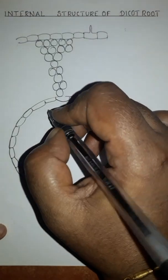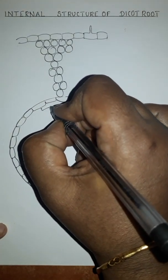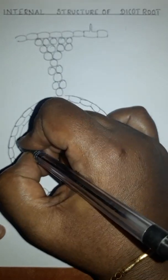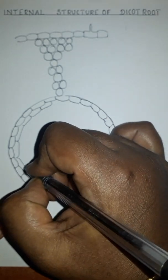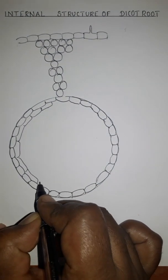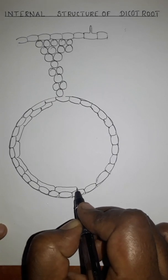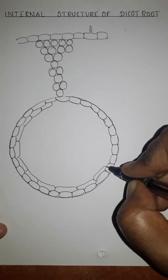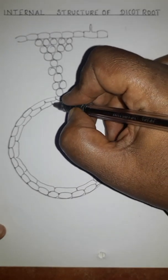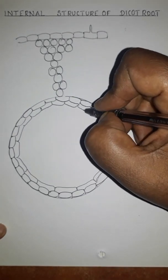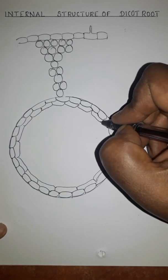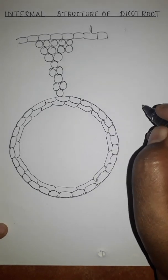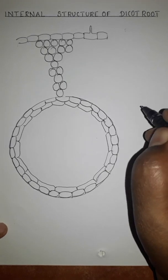Inner to the endodermis you will see a layer called pericycle, also made up of barrel shaped cells. From this pericycle, lateral roots arise — from the primary root, secondary or lateral roots arise from the pericycle. Other than that, this pericycle gives rise to cambium at the time of secondary growth.